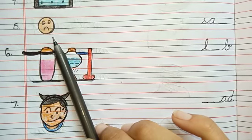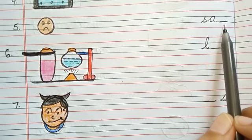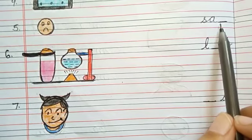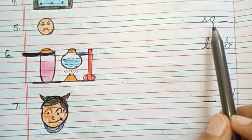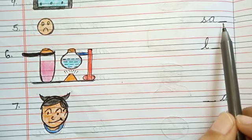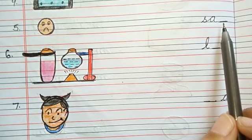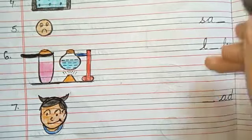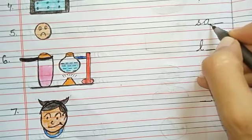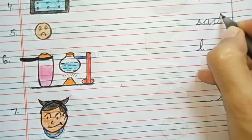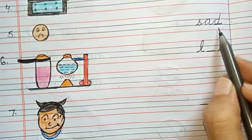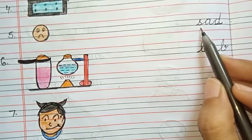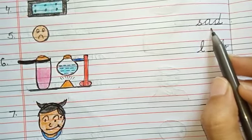Number five is sad. S-A-D. Sad. Spelling of sad is S-A-D. Which letter is missing, kids? Yes. D is missing. So, write down D here. Remember the phonic sound, da. S-A-D. Sa ad. Sad.